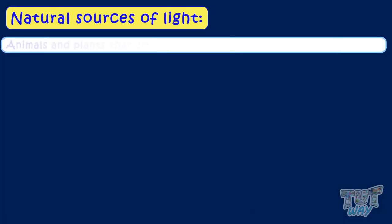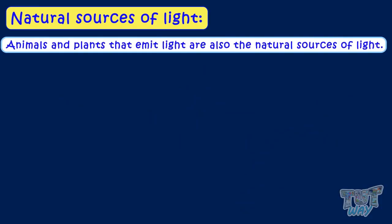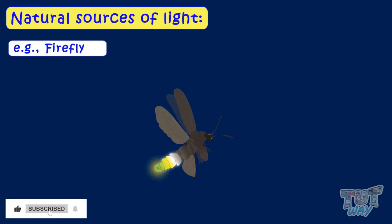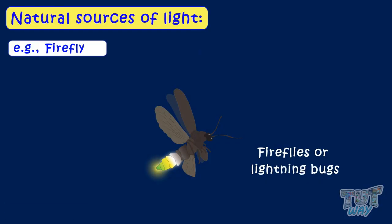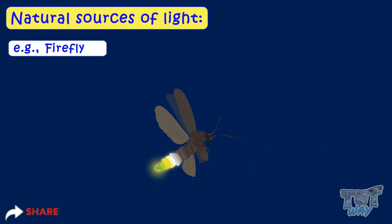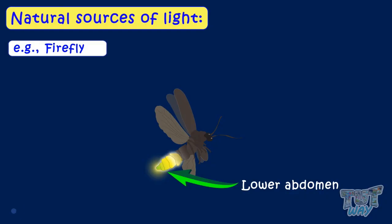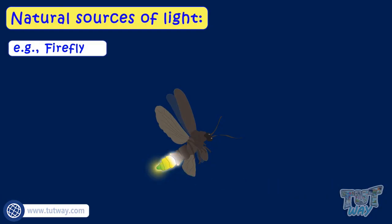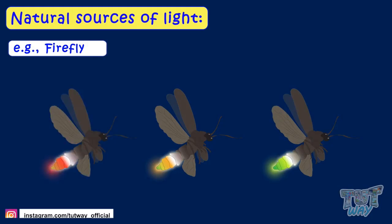There are also certain animals and plants that emit light and are natural sources of light. Let's see a few of them. Fireflies, or lightning bugs — there are many varieties of fireflies. They have light-emitting organs below their abdomen and produce light of different colors like yellow, green, or red.